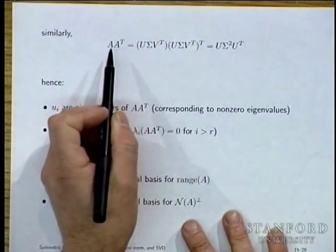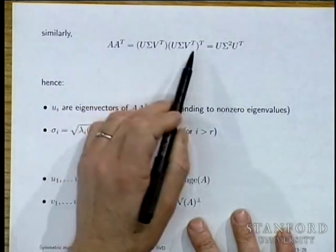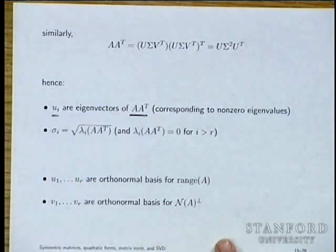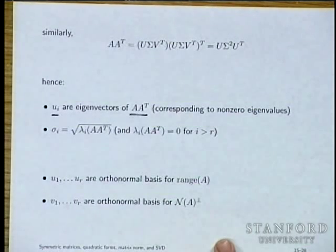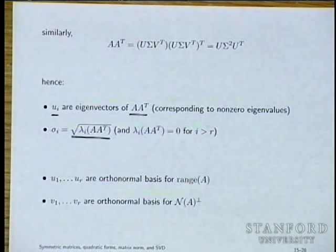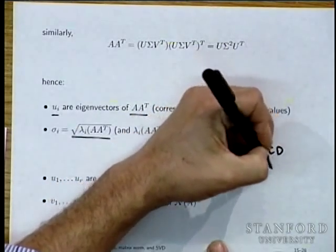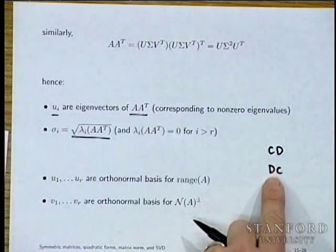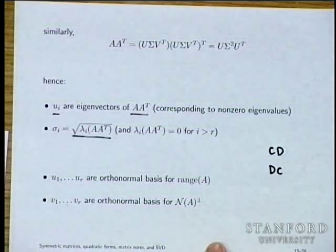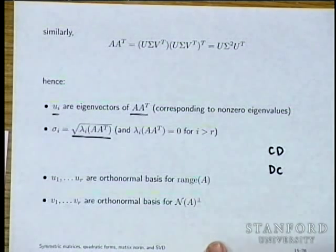If you multiply A by A^T the other direction, you get A A^T = U Σ² U^T. So the U_i are eigenvectors of A A^T, and σ_i are again the square roots of those eigenvalues. Both formulas are correct because the non-zero eigenvalues of CD are the same as the non-zero eigenvalues of DC. So A A^T and A^T A have the same non-zero eigenvalues, even though they generally have different sizes.